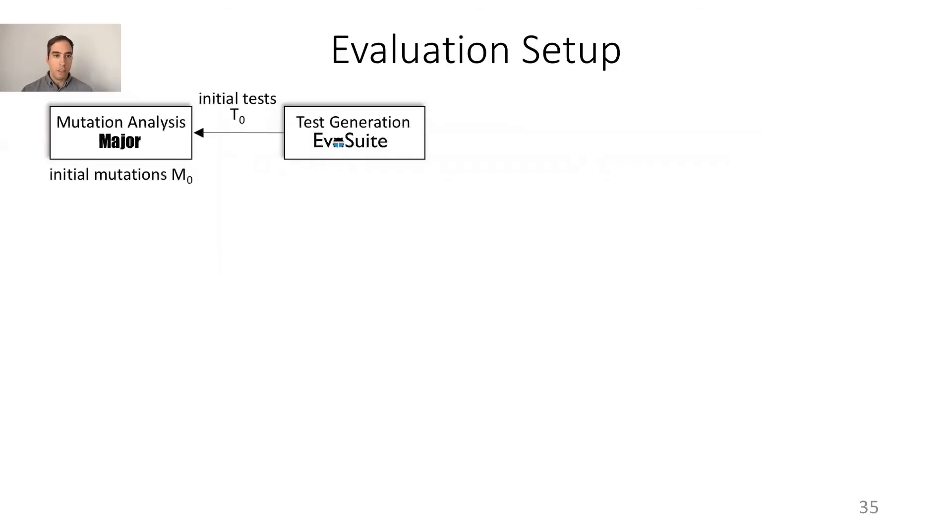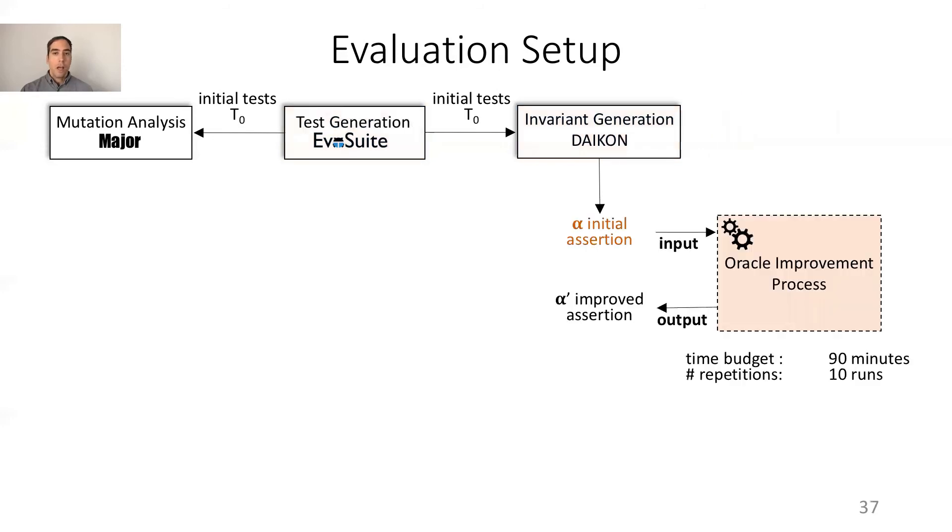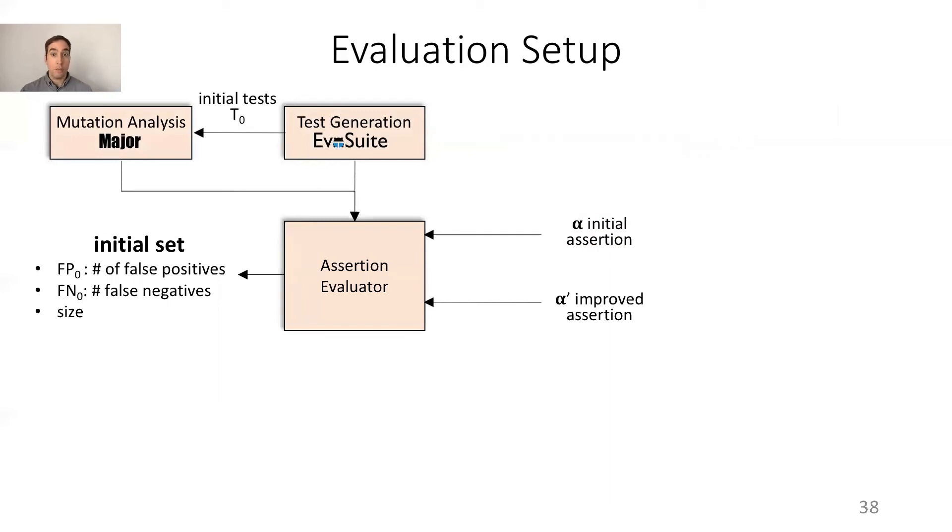For each subject we performed the following evaluation setup. First we collected the initial test cases and mutations with EvoSuite and Major. Then we gave the initial test cases to Daikon to produce the initial assertion alpha. For 11 subjects, Daikon failed to find an invariant that generalizes well for all the testing input. In these cases we use assert(true) as the initial assertion, which has zero false positives but will not kill any mutant. Then we performed the oracle improvement process with a time budget of 90 minutes and we ran the process 10 times to cope with the stochastic nature of genetic programming. Then we evaluated the initial assertion and the improved assertion in terms of false positives, false negatives and size.